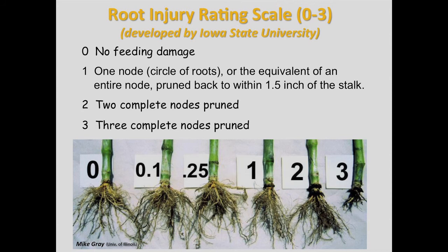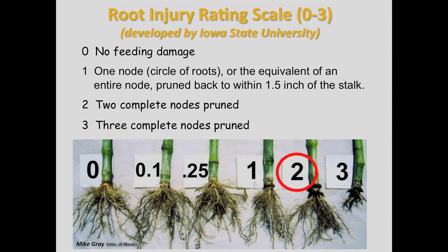A common scale for rating root injury is a zero to three scale developed at Iowa State University. Zero is no injury. One means one complete node — approximately 10 roots — is pruned to within one and a half inches of the stalk. Two means two complete nodes — approximately 20 roots — are pruned to within one and a half inches of the stalk. Three means three complete nodes — approximately 30 roots — are pruned to within one and a half inches of the stalk.